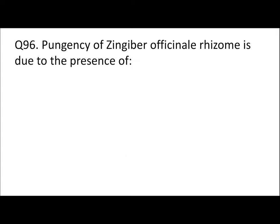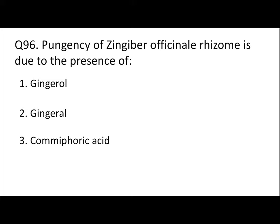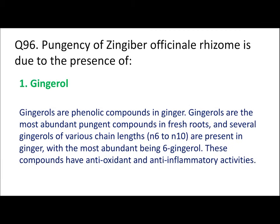Question 96: The pungency of Zingiber officinale rhizome is due to the presence of gingerol, comiphoric acid, or citral? The answer is gingerol. Gingerols are phenolic compounds and the most abundant pungent compounds in fresh ginger roots. Several gingerols of various chain lengths are present, with the most abundant being 6-gingerol.